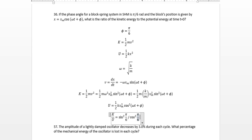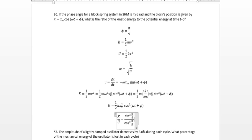And that's all we're left with in the end. The m's divide, the k's divide, the xm squareds divide. We're left with sine squared pi over 6 over cosine squared of pi over 6.